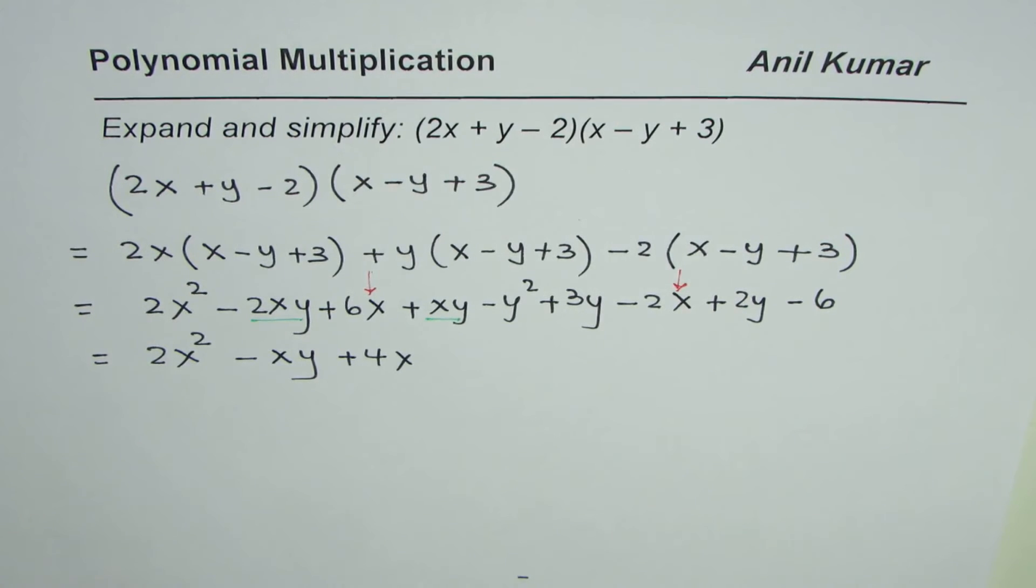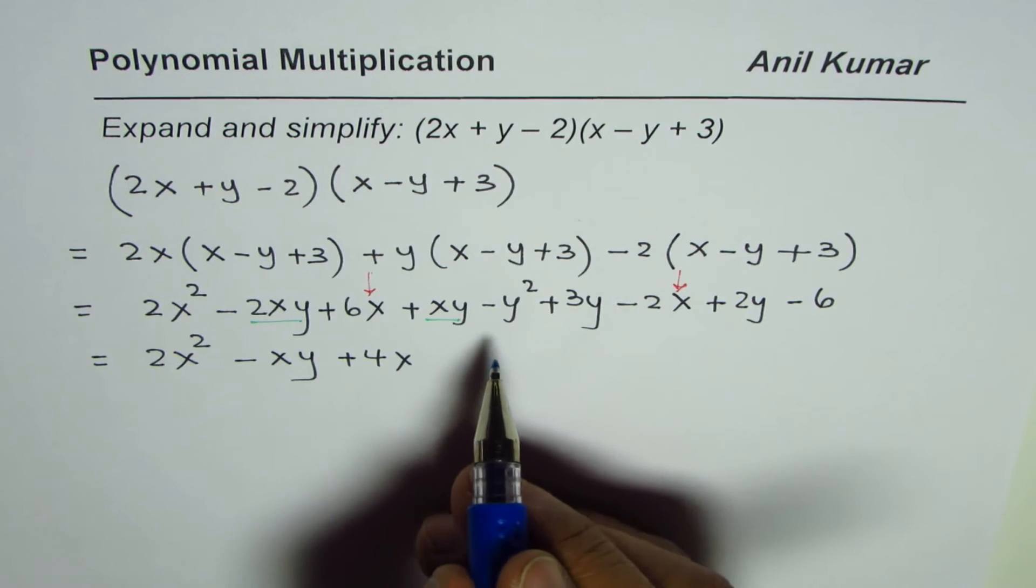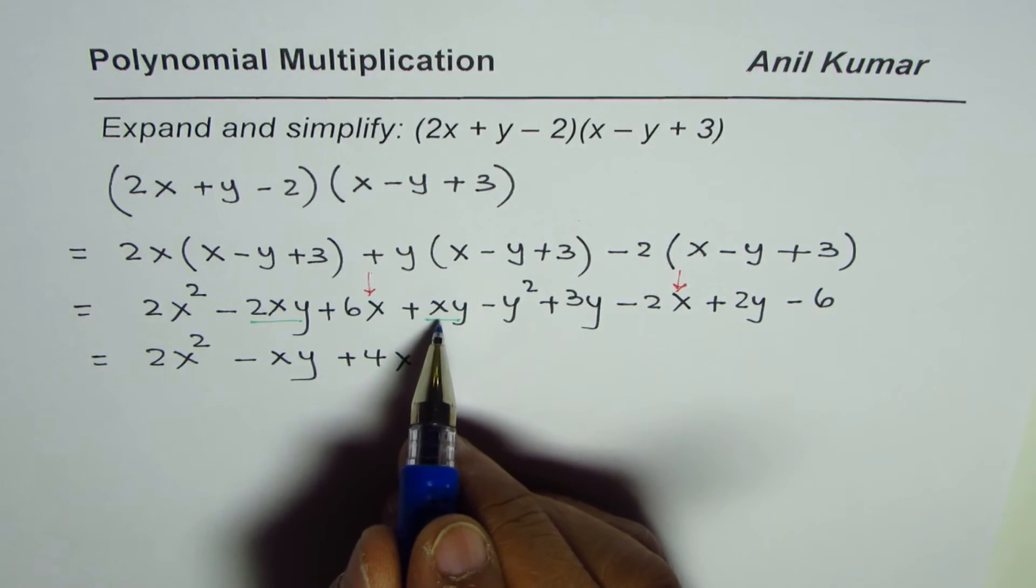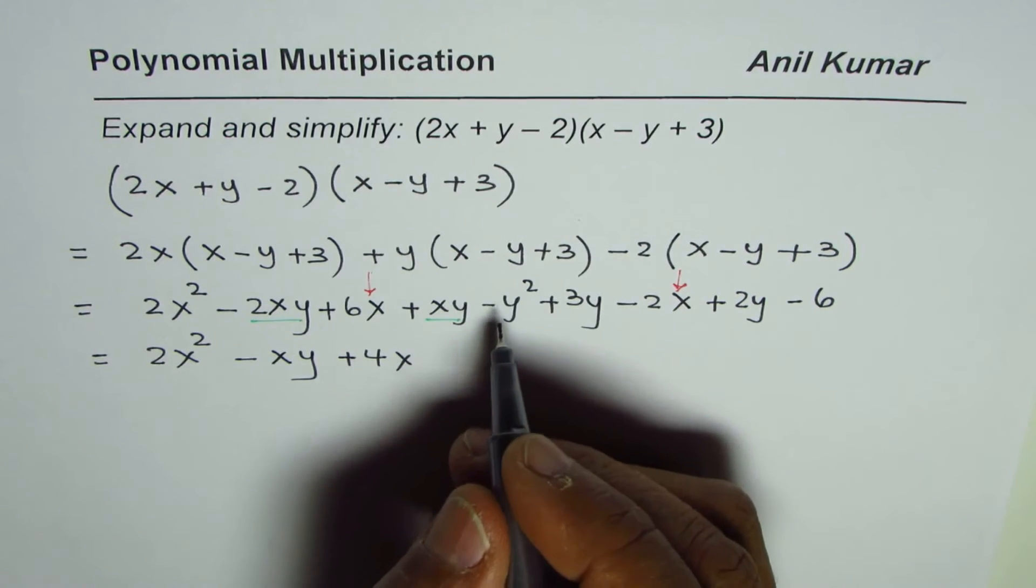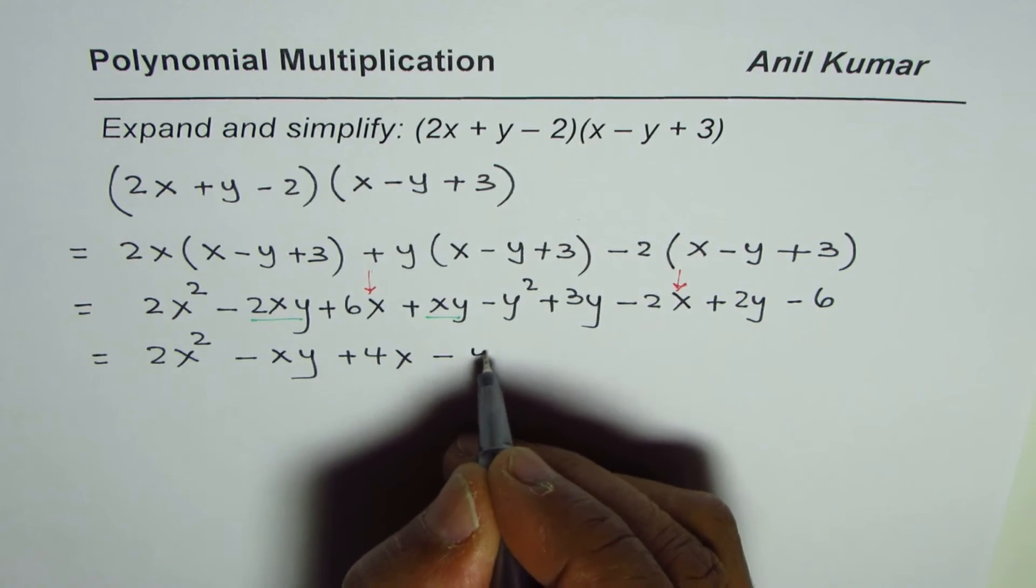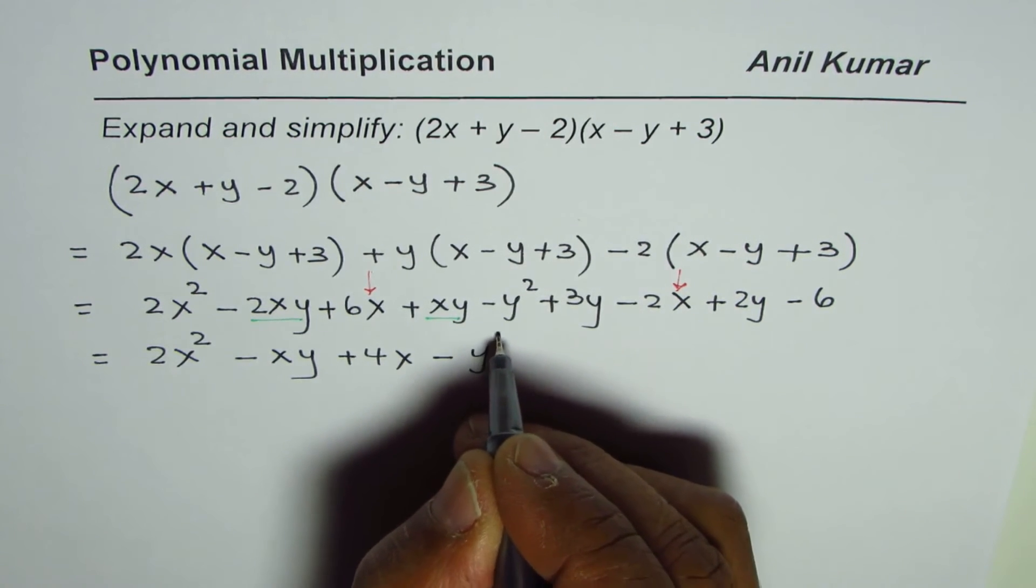It is good to mark them so we don't miss any. Now the next term. We have already taken care of xy and -y². There are no other y² terms, so we have -y².